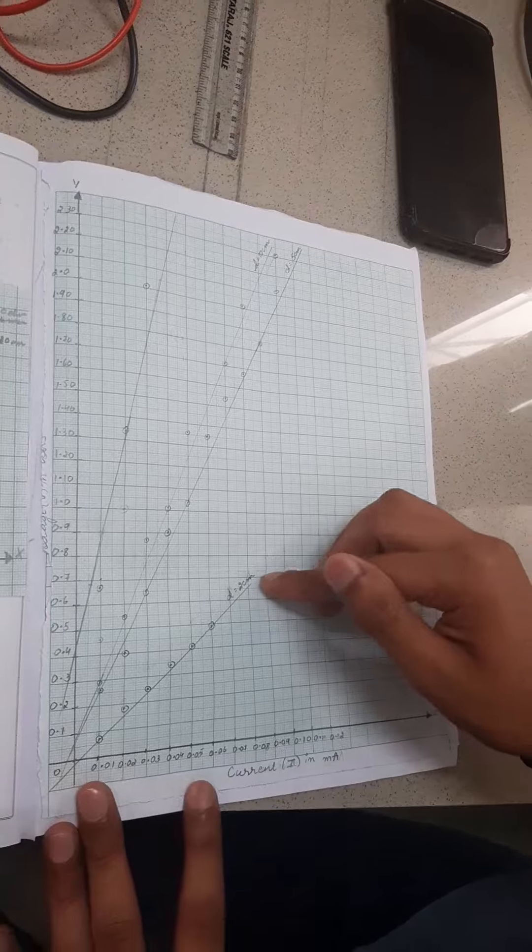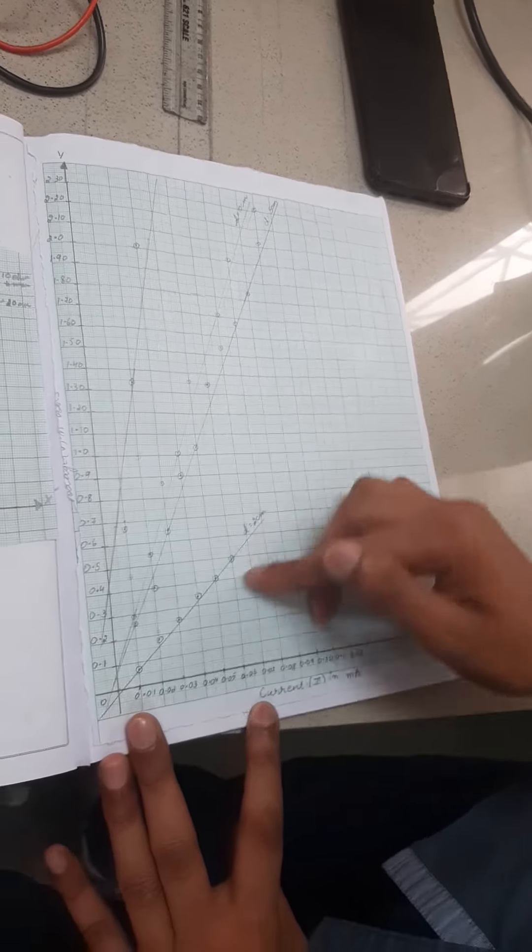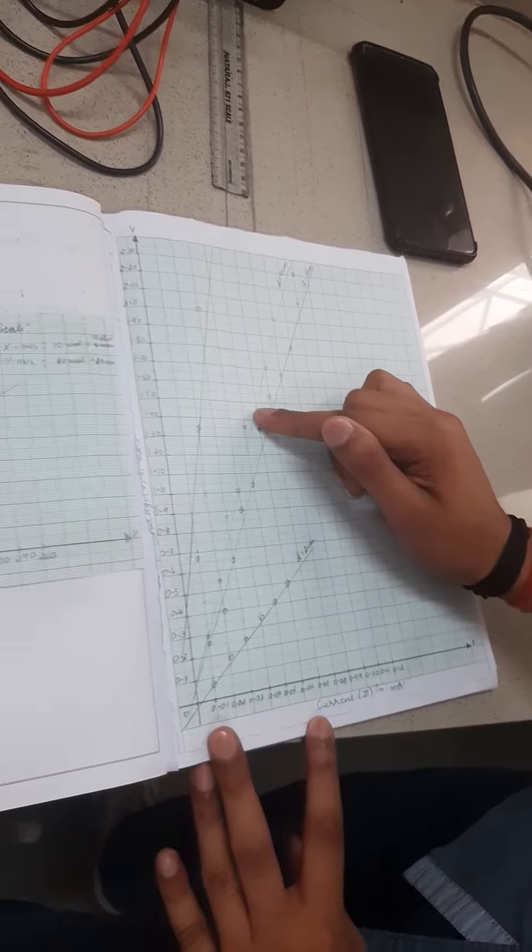And also, for different values of distances, we plot the current and voltage. And we obtained again a linear relation, which proves Ohm's law.